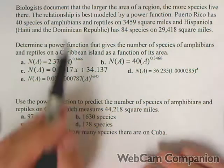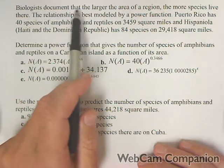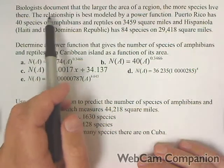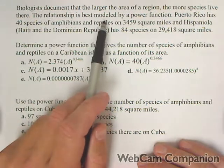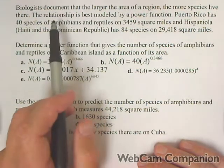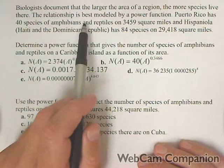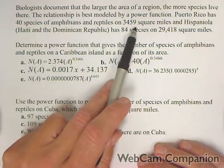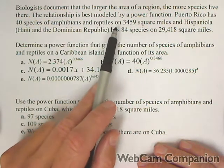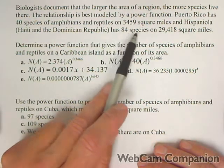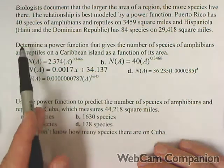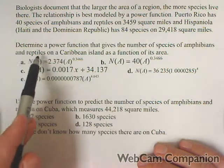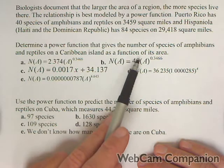In this video, we're asked to find a power function. Biologists document that the larger the area or region, the more species that live there. The relationship is best modeled by a power function. Puerto Rico has 40 species of amphibians and reptiles on 3,459 square miles, and Hispaniola has 84 species on 29,418 square miles. Determine a power function that gives the number of species as a function of its area.